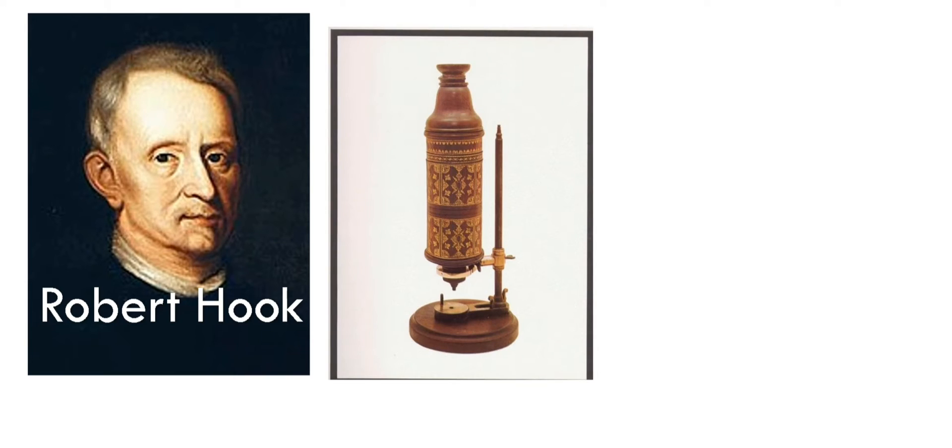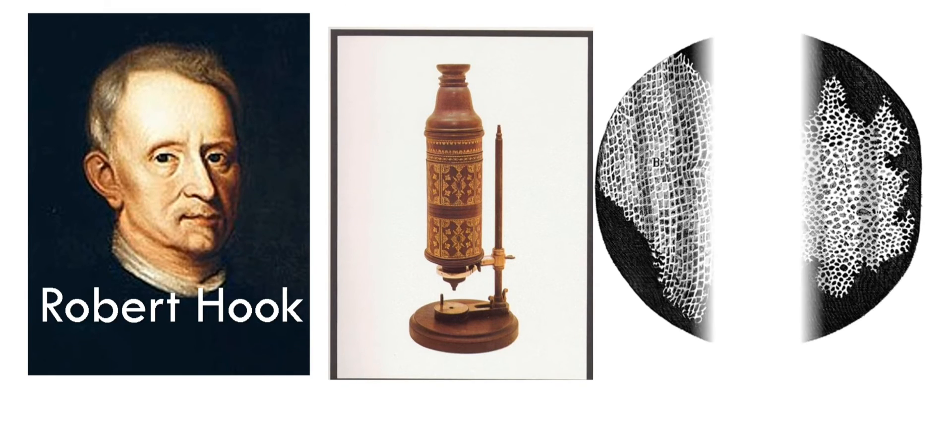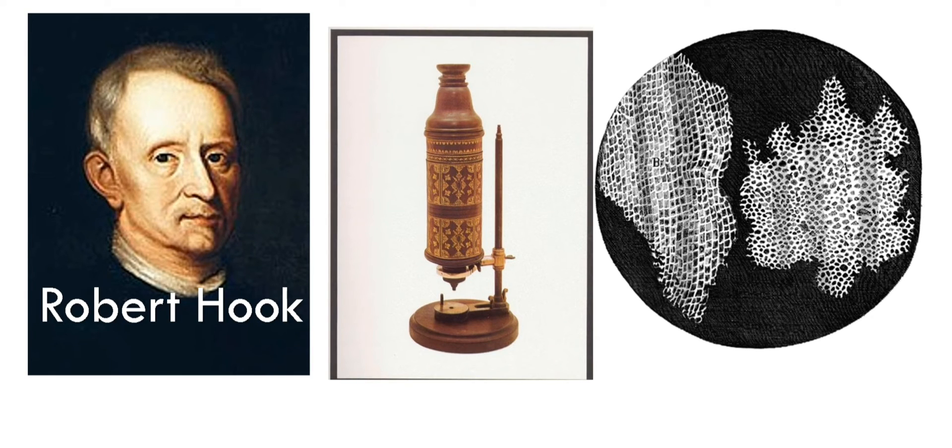In 1665, scientist Robert Hooke observed a thin section of cork under the microscope. In this section, he saw hexagonal compartments like those of a beehive, and he named those compartments as cells. Cells is derived from the Latin word 'cella' meaning small rooms.